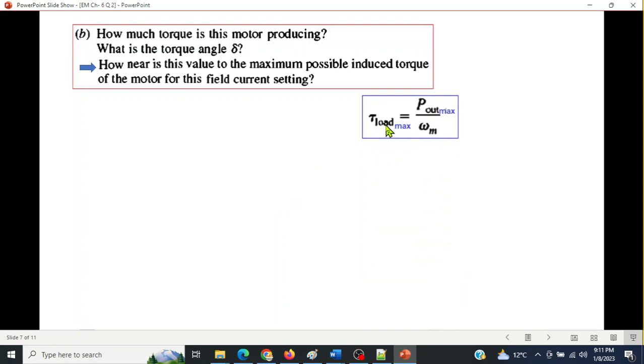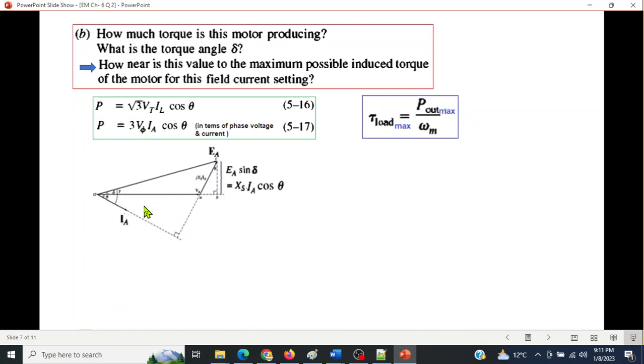How near is this value of the torque to the maximum possible induced torque? Now we can use the same formula. We just write maximum. So to get maximum torque load, we have to find out Pout maximum. So let's see how to find. We'll use these two formulas. We had already known this. And if we convert VT into V phase, we'll get this second formula. From here, we'll first of all calculate Ia cos theta.